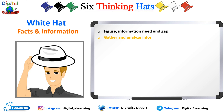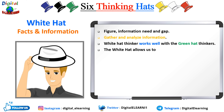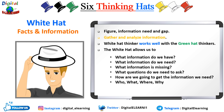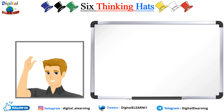The white hat asks you to gather and analyze as much information as possible about the situation. White hat thinkers work well with green hat thinkers — for example, when green hat thinkers come up with new ideas or solutions, white hat thinkers can find the data to support those solutions. White hat thinkers ask: what information do we have, what information do we need, what information is missing, what questions do we need to ask, and how are we going to get the information we need?